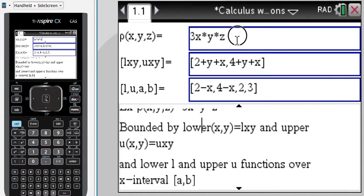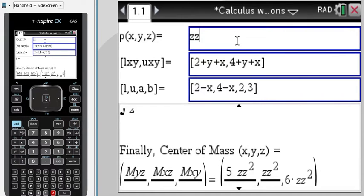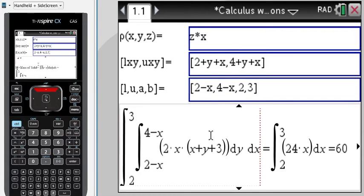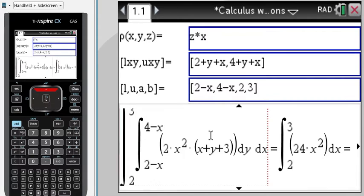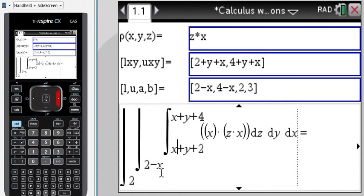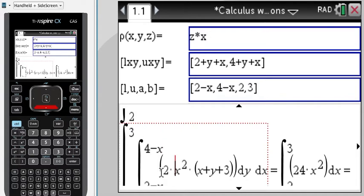If we now change the density function, let's say it's going to be z times x, and I scroll down here. Here you can see there's much more computations involved because we have here three integrals involved instead of two. If you scroll down carefully, you can see how each integral gets evaluated.